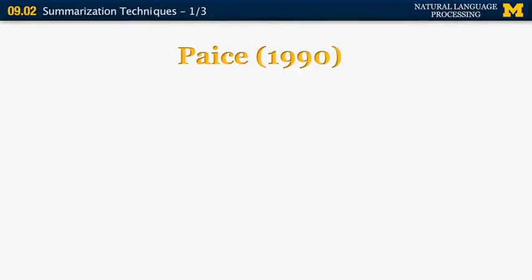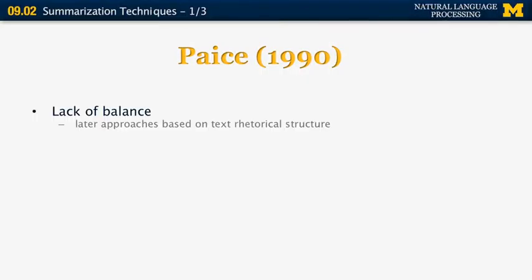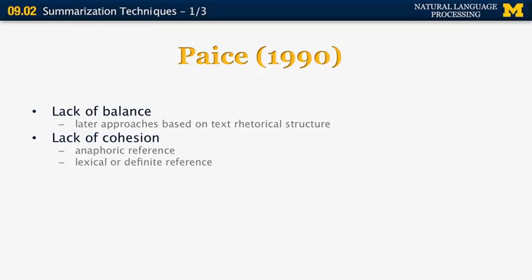One technique Paice liked for dealing with lack of balance was the use of rhetorical structure of text, specifically the work by Daniel Marcu, which will be discussed in a later slide. Lack of cohesion can be addressed using techniques from discourse analysis. To deal with issues of anaphoric reference — the presence of pronouns, definite anaphora, or lexical reference — you need to understand and use the correct rhetorical connectives when generating the output sentences.